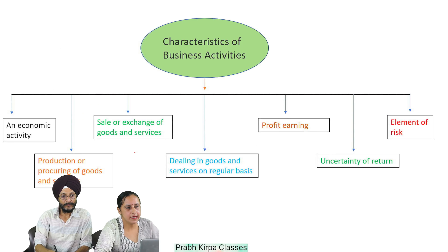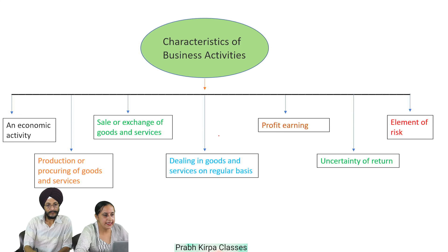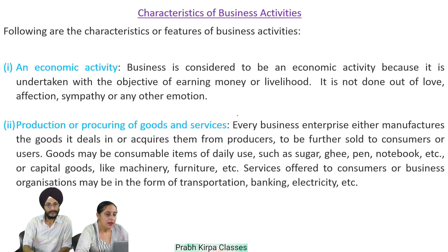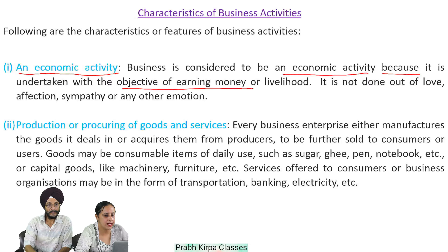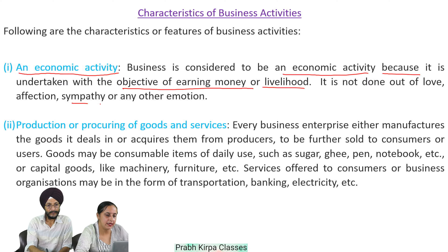Characteristics of business activities: Following are the characteristics or features of business activities. Number 1: An Economic Activity — business is considered to be an economic activity because it is undertaken with the objective of earning money or livelihood. It is not done out of love, affection, sympathy, or any other emotion. Number 2: Production or Procuring of Goods and Services — every business enterprise either manufactures the goods it deals in or acquires them from producers to be further sold to consumers or users.